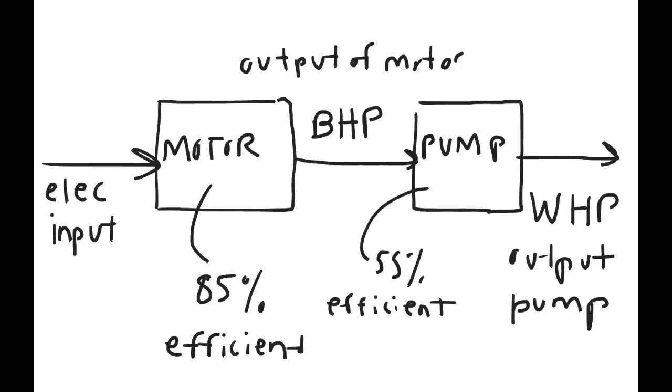And just to recap, always remember that the efficiency of the system is always the output divided by the input. So if you wanted to find the input to a pump, you take the efficiency and the water horsepower, which is the output. Or if you wanted to find the input to the motor, you would take the efficiency and the output of the motor and do it algebraically to find the answer.